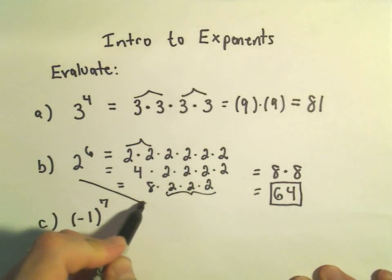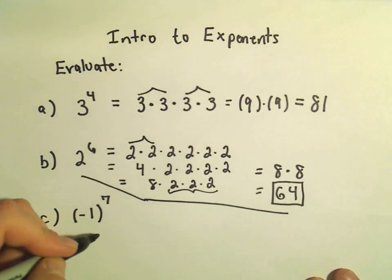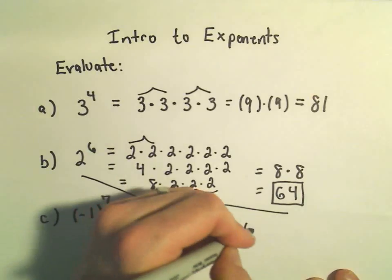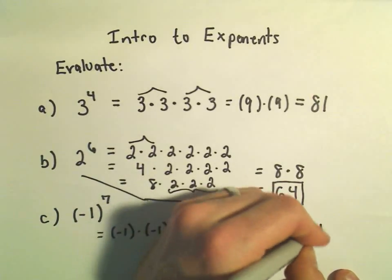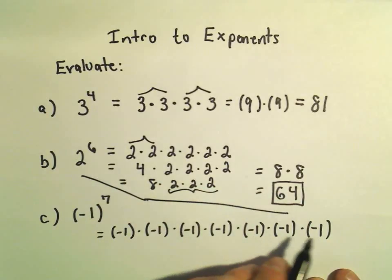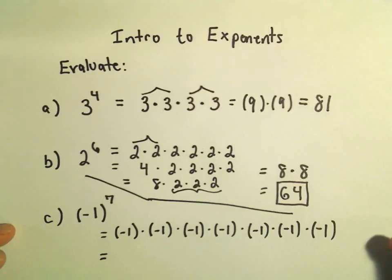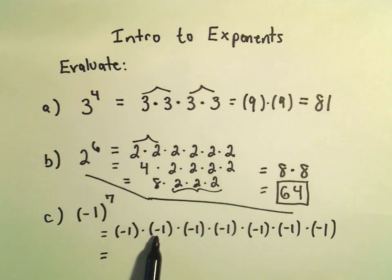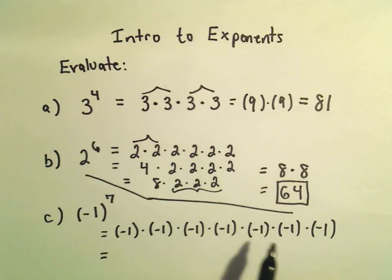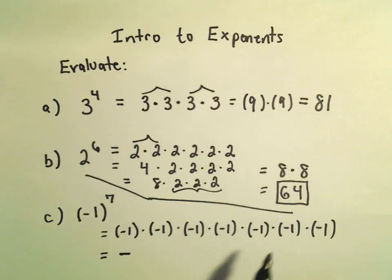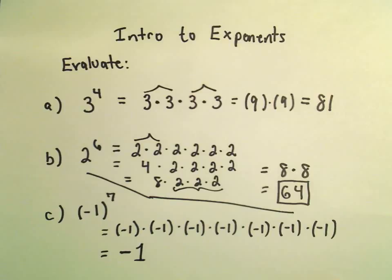Last but not least, we have negative 1 to the 7th. All this means is we have negative 1 times negative 1 times negative 1 — seven times total. The thing that really matters here is just the signs. Negative times negative is positive, times another negative makes it negative, times another negative makes it positive, times another negative makes it negative, times another negative makes it positive, and lastly another negative means we end up with a negative number. Then 1 times 1 seven times just gives us 1, so the result is negative 1.